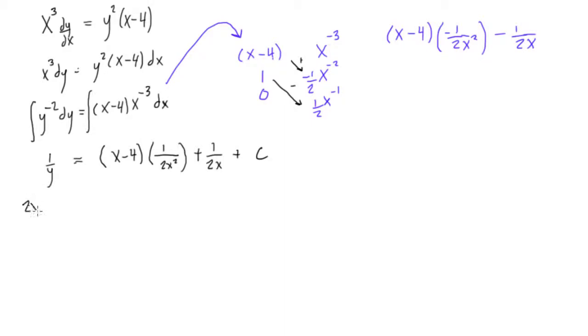Okay, this is going to get a little messy. So 2x squared y times 1 over y is equal to 2x squared y times all this stuff, x minus 4, we can just put this over here, times 2x over 2x squared, plus 2x squared y all over 2x, plus 2x squared y times c.